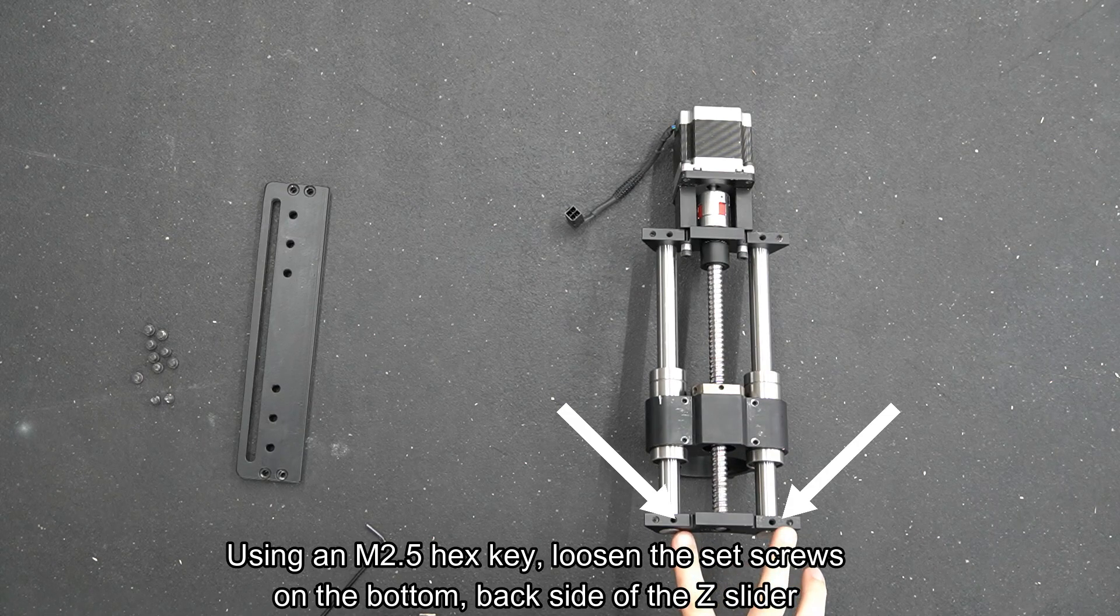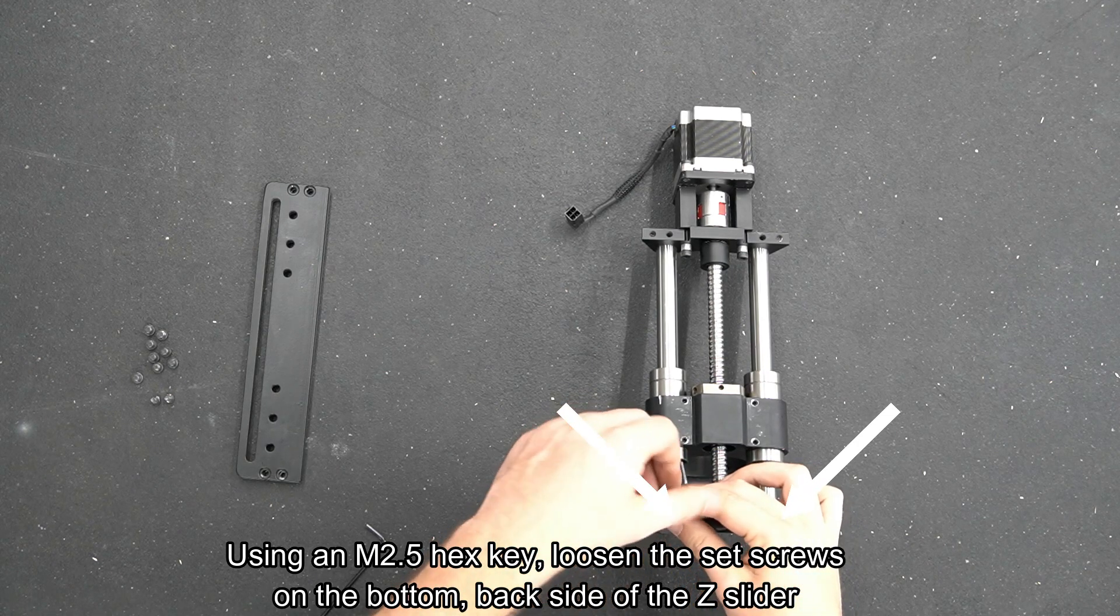Using a 2.5mm hex key, loosen the set screws on the bottom back side of the Z slider.